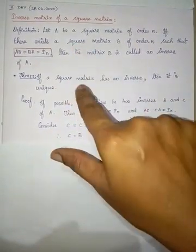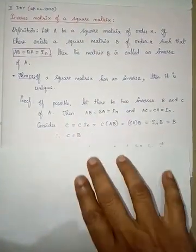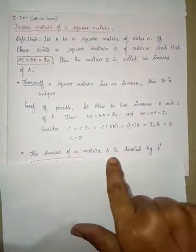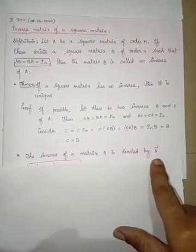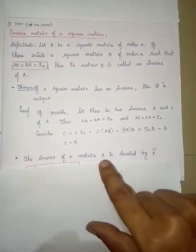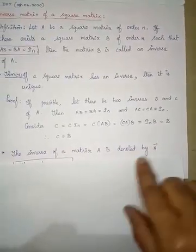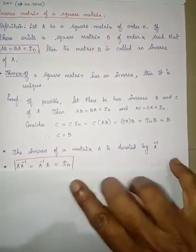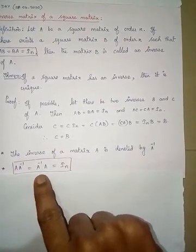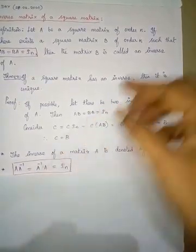So the theorem is: if a square matrix has an inverse, then it is unique. Instead of denoting B and C, we always use a unique notation. The inverse of matrix A is denoted by A inverse. It must satisfy the inverse property: A times A inverse equals A inverse times A equals I_n. This is the important property of the inverse.